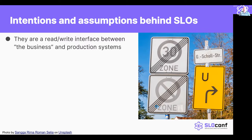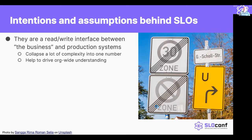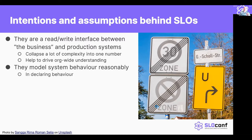First of all, there is a read-write interface, really, between the business and production systems, and a way to collapse a lot of complexity into one number, which really helps to drive org-wide understanding about the services, what should be done with them, how relatively important they are, and so on. Another assumption behind the model is that SLOs — the numbers, the structures of the numbers — model system behavior reasonably, both in declaring behavior about a system — we want this to be two nines and this to be five nines — and in assumptions about how you measure that behavior and what that measurement means.